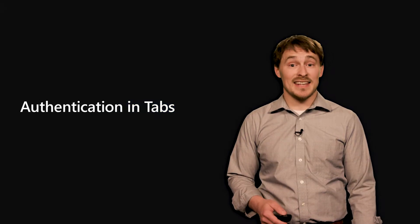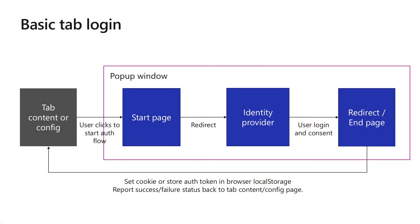Let's look at authentication in tabs. With that general pattern, the only differences between tabs and other flows are the starts and the ends. For the basic tab flow, your tab content or config page will present the user with a button that they will click on to notify Teams to open the authentication pop-up. That pop-up will first open a page on a domain you own, which will redirect to the identity provider, and upon authentication, redirect back to a page on your domain so that you can use the JavaScript SDK to notify Teams of success or failure. Specifically for the tab flow, that success or failure should get the end page to either set a cookie or store the token and information in local storage so that your content or config page can use it for later processing.